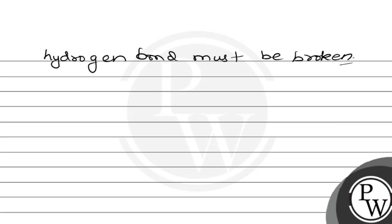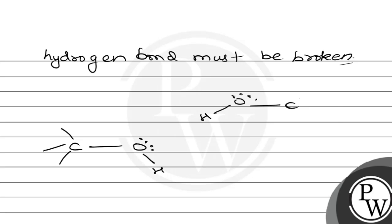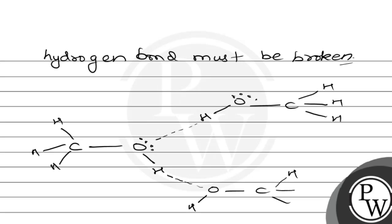The hydrogen bonding in methanol can be depicted as: the dipole bond on O, connected through the hydrogen bond to O. Hydrogen bonding in methanol can be shown by this figure.